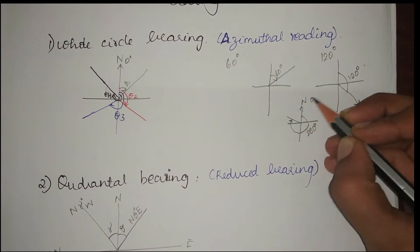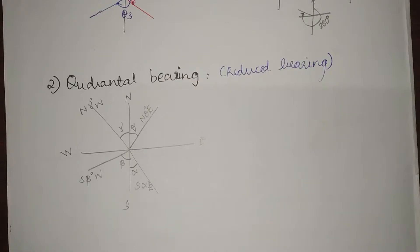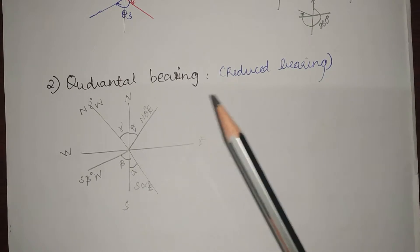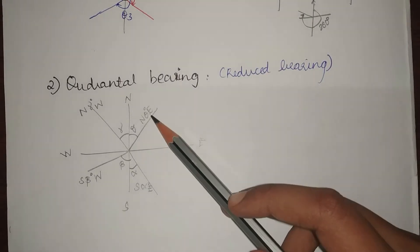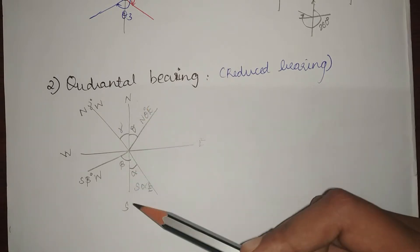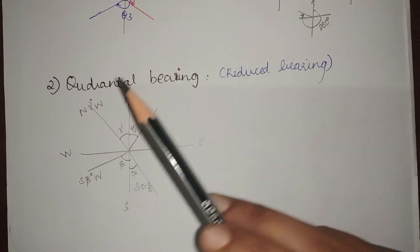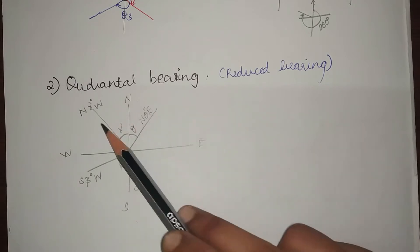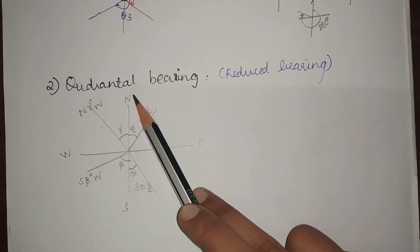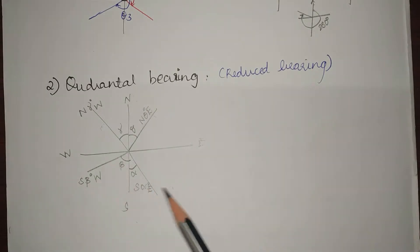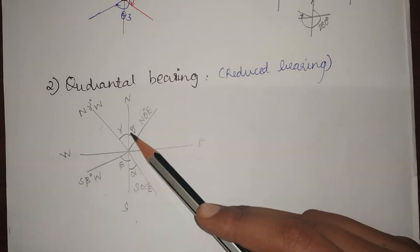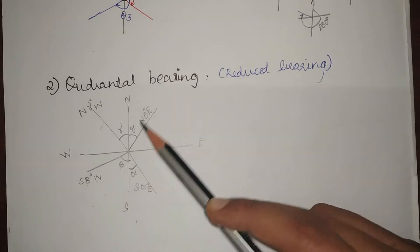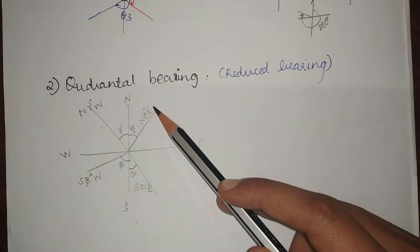When we come to quadrantal bearing, it is slightly different. Here we measure the angles with respect to both north and south. If the angle lies in the first or fourth quadrants, we measure it with respect to north. If it lies in the second or third quadrants, we measure it with respect to south.